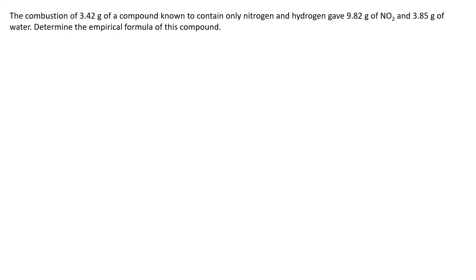Please try this example on your own. It's very similar to the previous two examples. The only difference is you're asked to find the empirical formula for a compound made up of nitrogen and hydrogen instead of carbon and hydrogen, but the steps and methodology are the same. I'll give you a few seconds to write down the values and set it up. If you don't get this answer or you're stuck, email me — we can set up a remote meeting or you can email your question and I will answer.